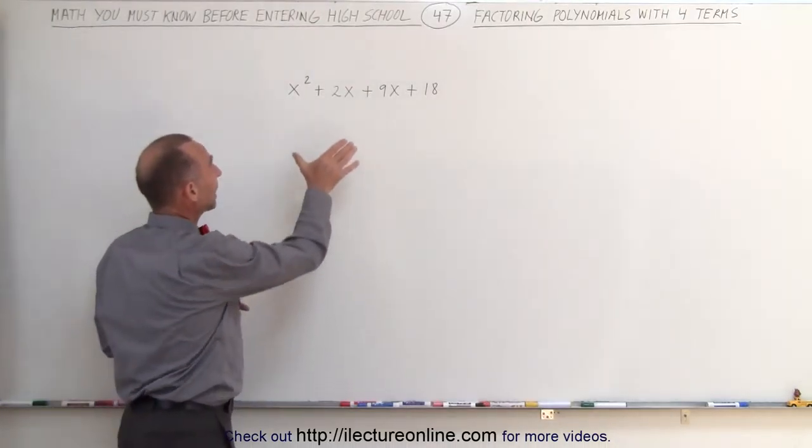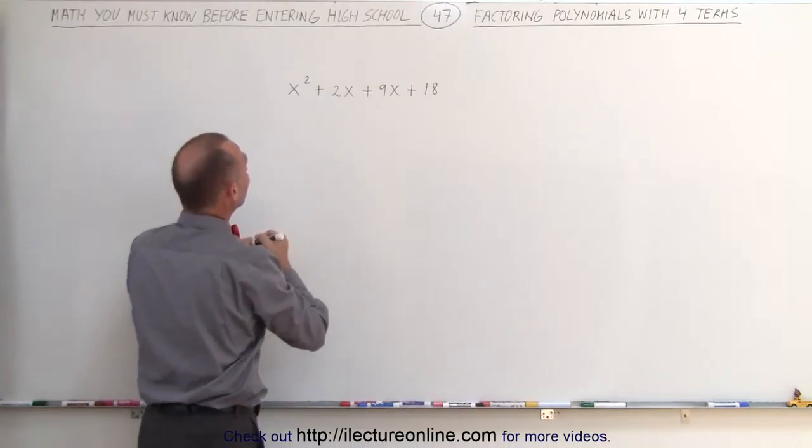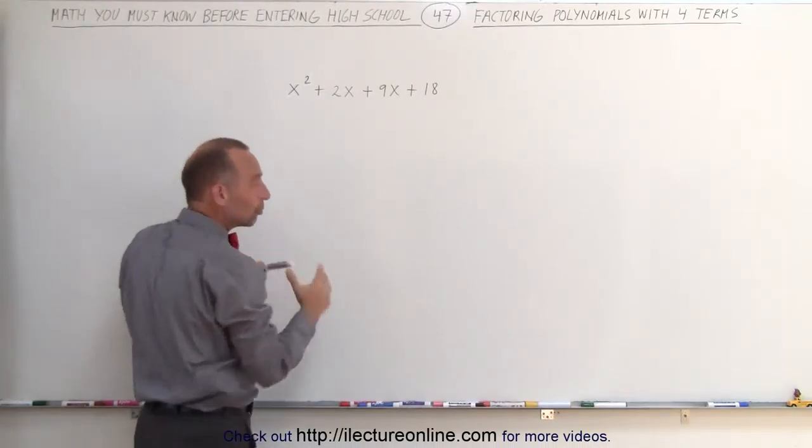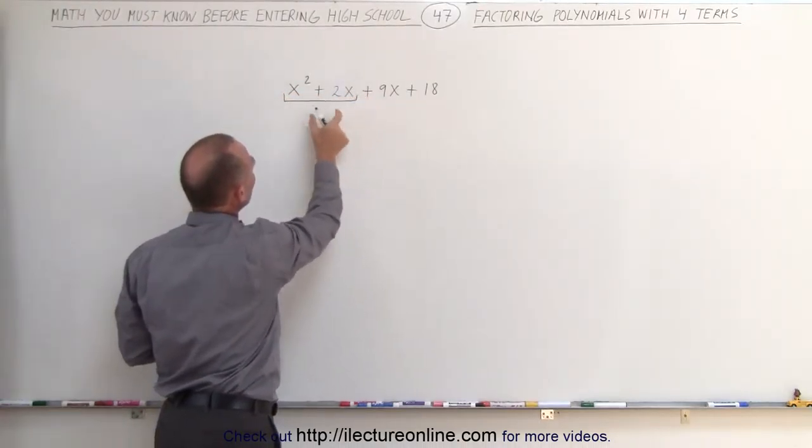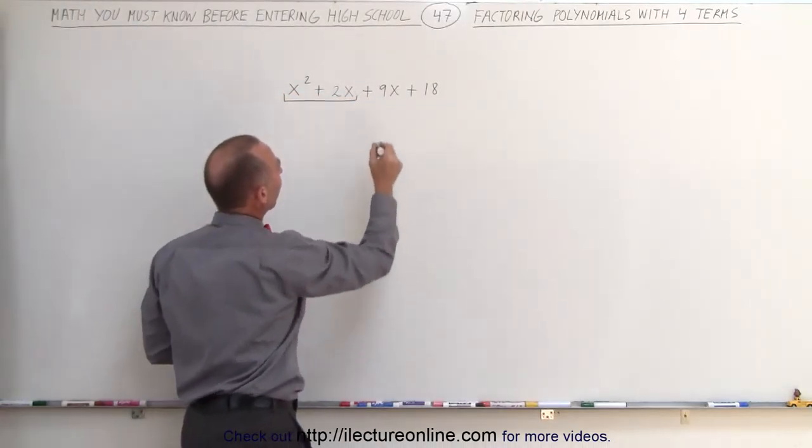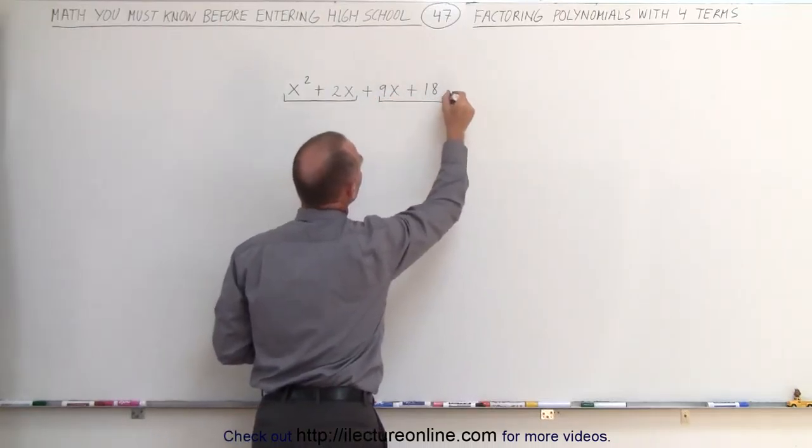What we do is take the first two terms and group them together. One way to make it easier to see what we're trying to do is to simply put a little bracket underneath it, which means we're going to group these two together, and now we're also going to group these two together.